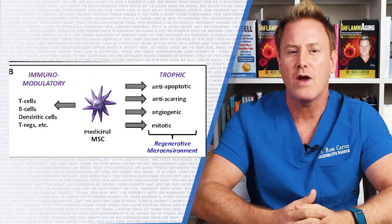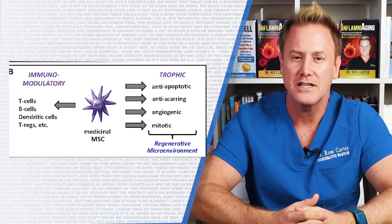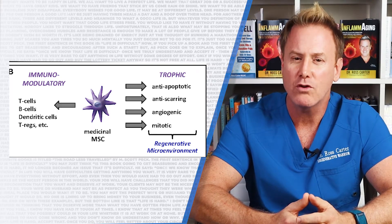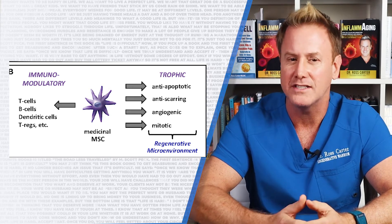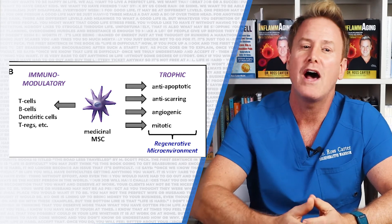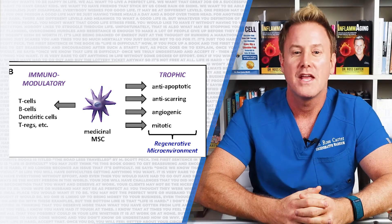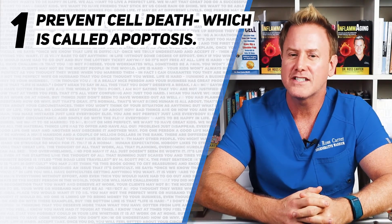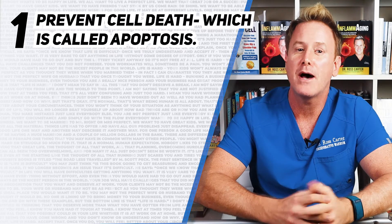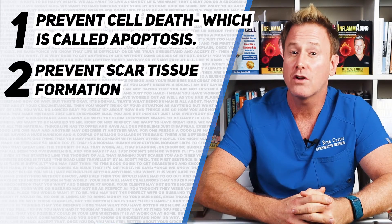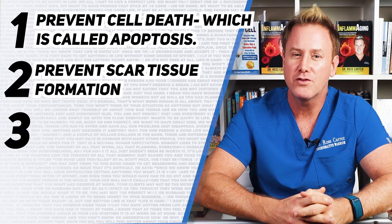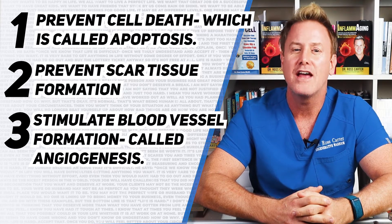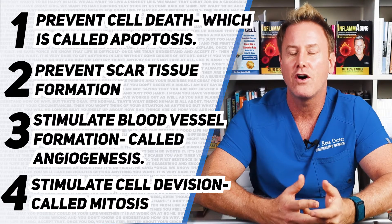As you can see on the right on this diagram, MSCs work by, number one, creating a regenerative microenvironment by stimulating the body's own resident stem cells, which live throughout the tissue of our bodies. It does this in four primary ways: number one, it prevents cell death, which is called apoptosis; number two, it helps to prevent scar tissue formation; number three, it stimulates blood vessel formation, which is called angiogenesis; and four, it stimulates cell division called mitosis.